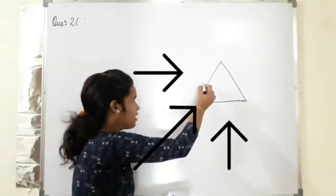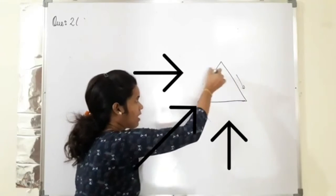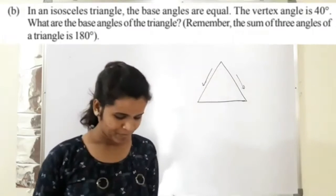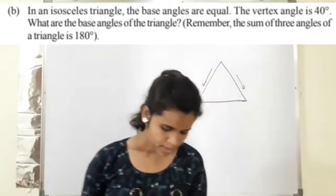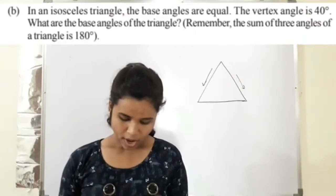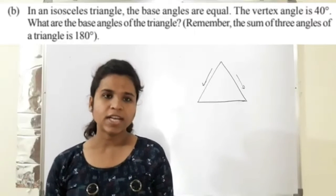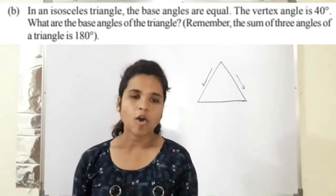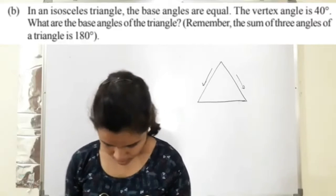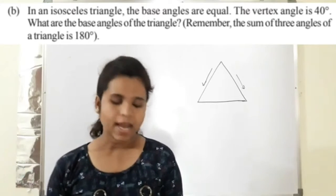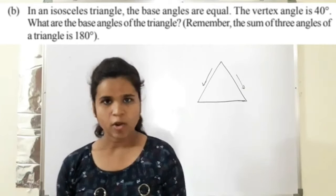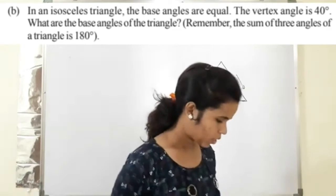Now one question. In an isosceles triangle, the base angles are equal. The vertex angle is 40 degrees. What are the base angles? Remember, sum of three angles of a triangle is 180 degrees. You should learn this.